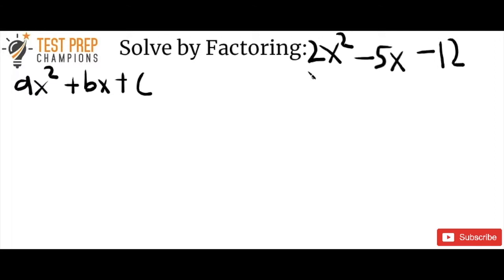Factoring is kind of tricky, but not really that hard — there are different ways to do it. I'm going to show you the way that I teach it. If it gets a little confusing, that's okay — I'll give you step-by-step instructions. The first step is to multiply the first number and the last number together.